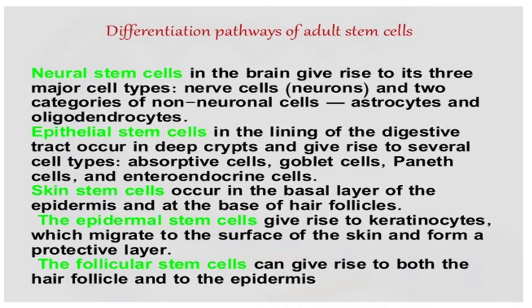Differentiation pathways of adult stem cells: Neural stem cells in the embryo brain give rise to three major cell types — neuronal cells, astrocyte cells, and oligodendrocyte cells. Epithelial type cells include absorptive cells, goblet cells, Paneth cells, and endocrine cells. The intestinal digestive tract has rapidly proliferating cells. The stomach has different types of cells, and the intestine has different types of cells, because the functionality of the cells are different.